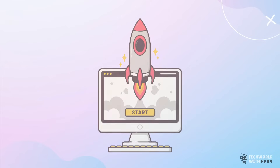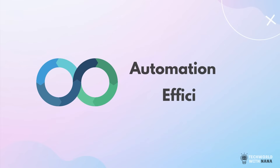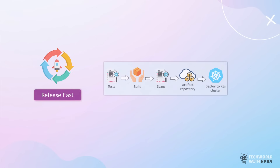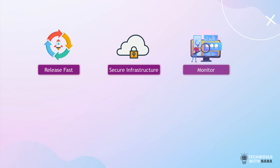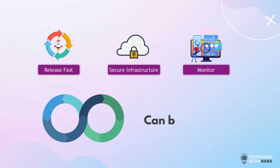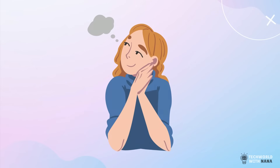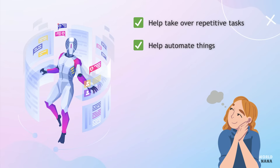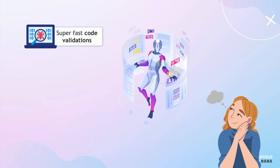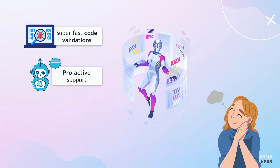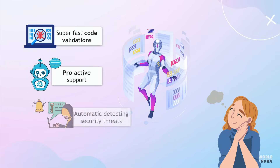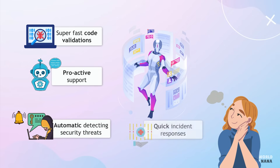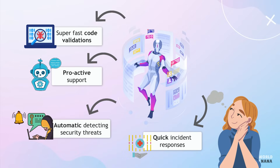With that out of the way, let's get to it. DevOps is all about automation and efficiency — whether we want to release a new feature fast, secure our infrastructure, or monitor our platform and prevent any issues in time. As part of DevOps principles, all these should be and can be automated. So imagine a scenario where AI is helping take over the tedious, repetitive tasks, help automate things, and help engineers make better decisions. This means super fast code validations, proactive support in case some issues happen on your cloud infrastructure or Kubernetes cluster, automatically detecting security threats, and super quick response to incidents, all driven by the power of AI.